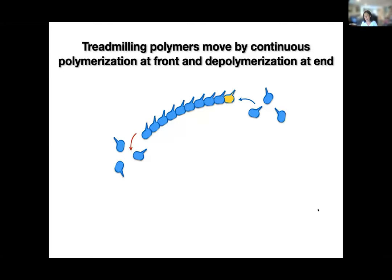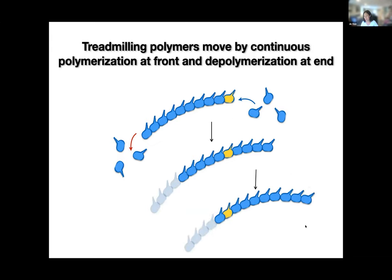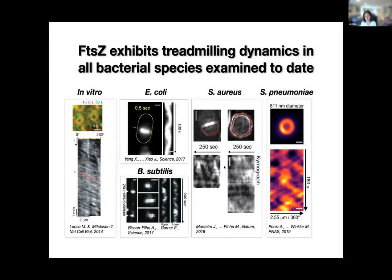At the same time, we know FtsZ monomers in those polymers are completely stationary. We did single-molecule tracking of individual FtsZ monomers in the polymer, and over 10 to 15 seconds they're completely stationary. So how could completely stationary monomers generate a directional movement at the ensemble level? This turns out to be a very interesting polymer dynamics called treadmilling — the treadmilling polymer moves by continuous polymerization at the front and continuous depolymerization at the end. As a result, the monomers do not move, but the polymer appears to move directionally.